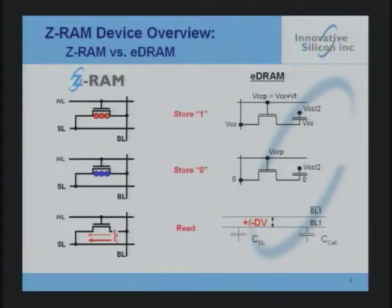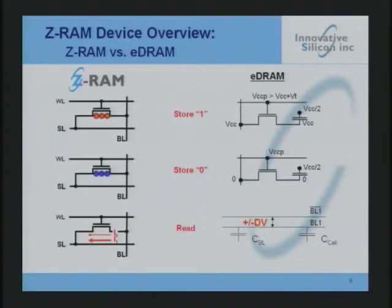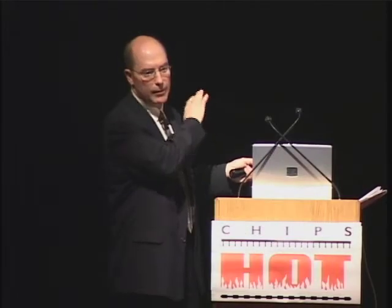Comparing ZRAM to conventional embedded DRAM: ZRAM works by storing charge in its floating body — we don't try to sense that charge directly. You get amplification right out of your cell by looking at the current through the cell. With a DRAM, you store charge in a capacitor, dump it onto a large bit line, and reamplify. Because of that fundamental difference, your initial latency can be very quick with this technology — you get a good advantage from that initial gain in your memory cell.